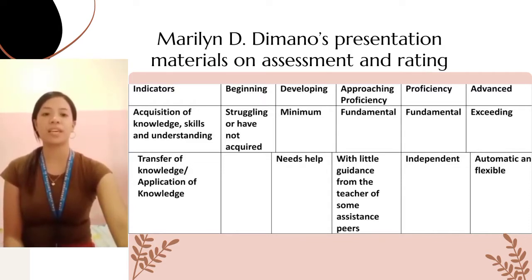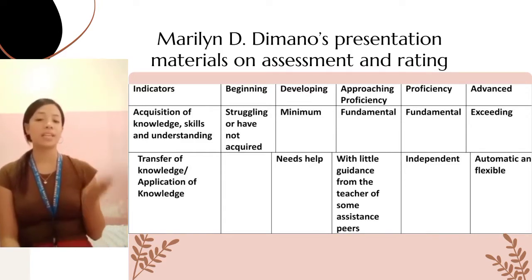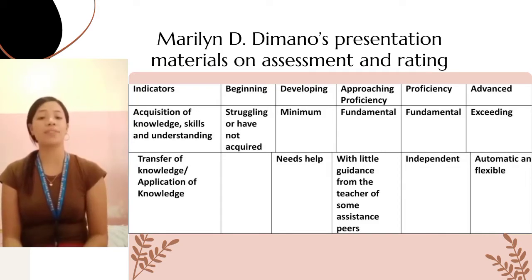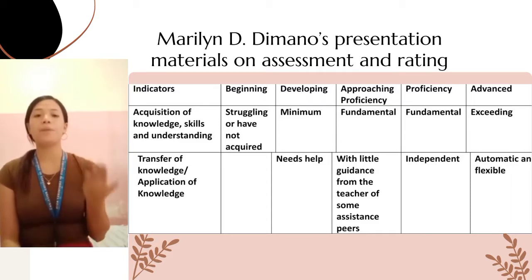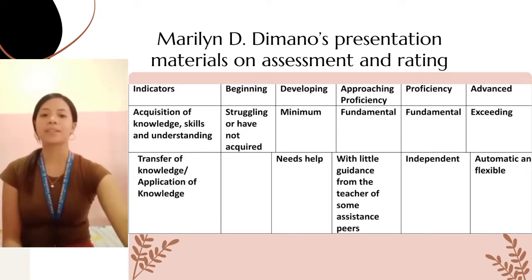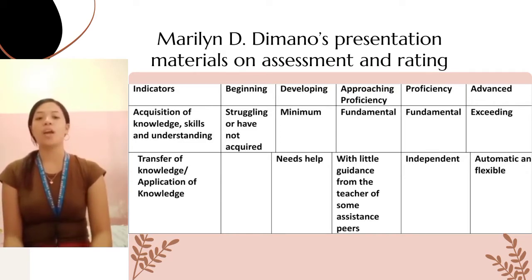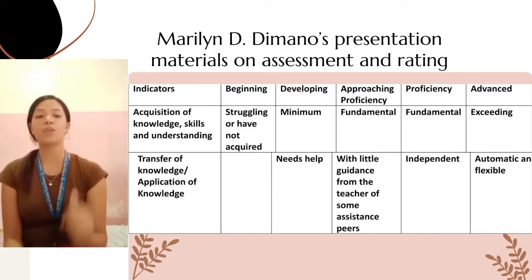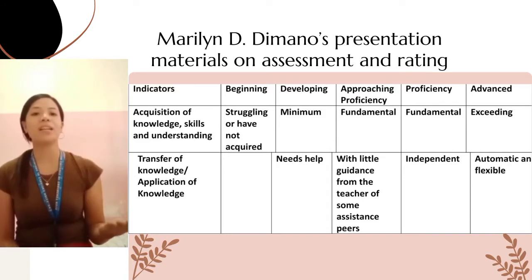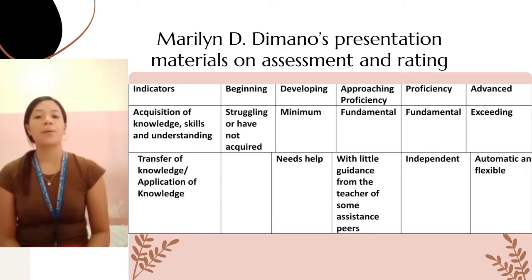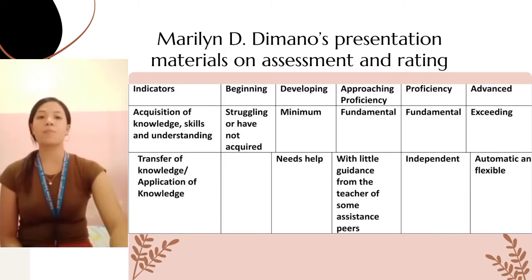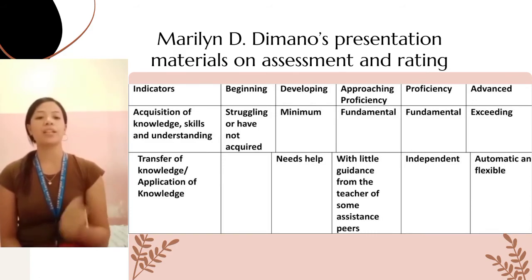In comparing levels of proficiency, the indicator is the acquisition of knowledge, skills, and understanding. At the beginning level, students are struggling or have not yet acquired them. At developing, they have minimum acquisition. At approaching proficiency, they have fundamental acquisition. At proficient, they also have fundamental acquisition. At advanced, they exceed requirements. For transfer of knowledge, beginning has none, developing needs help, approaching proficiency requires a little guidance from teachers or peer assistance, proficient is independent, and advanced is automatic and flexible. The source of this comparison is Marilyn D. Dimano's presentation materials on assessment and rating.